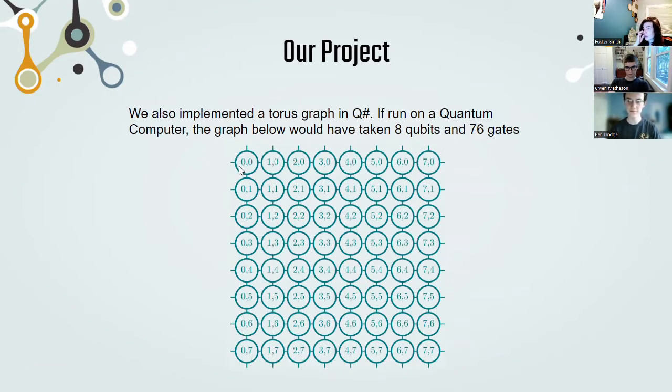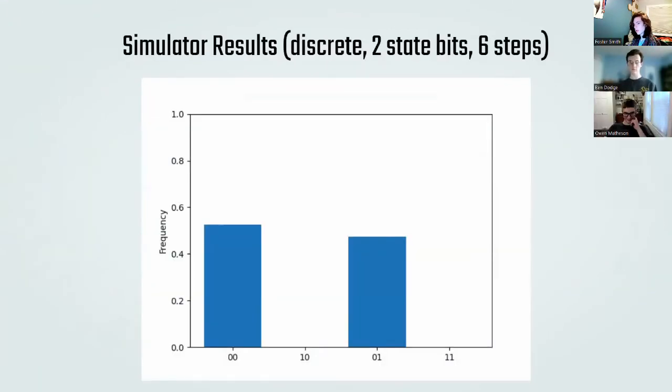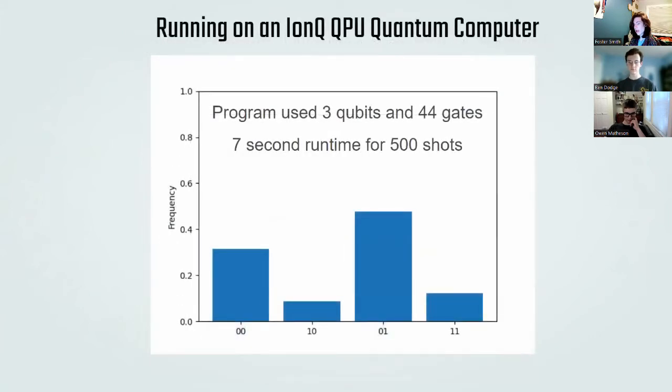Now we didn't actually run this on an actual quantum computer because it would have taken a prohibitive amount of gates to run and we wouldn't have gotten any good data. This is reflected in our simulator results in which we used two state bits in six iterations. The only two possible numbers were 0 and 2. Running it on an actual quantum computer we got these results which are pretty similar to our original.